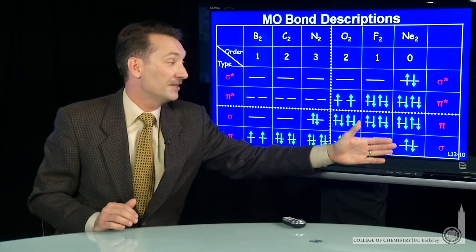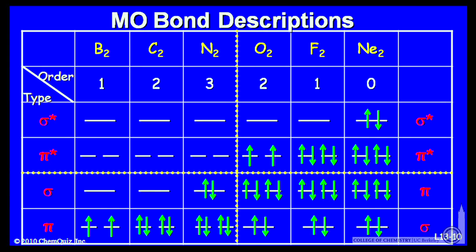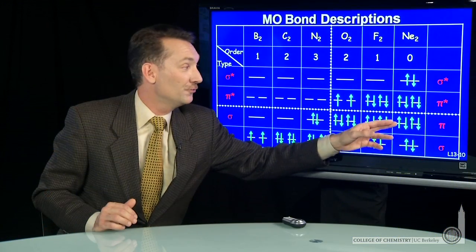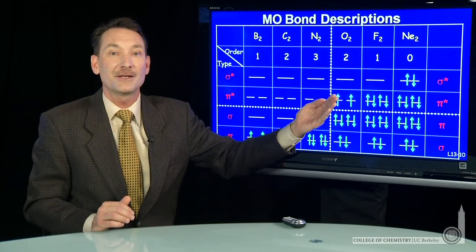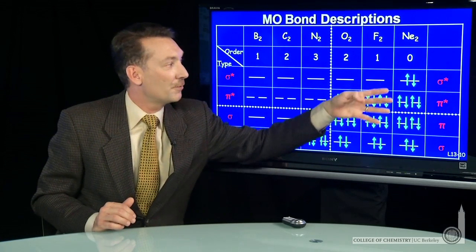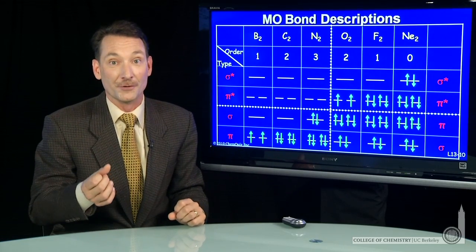And the final element, neon, we take the 6 electrons in the p orbitals for neon, 12 total. We populate the molecular orbitals, calculate the bond order, and you can see there's an equal number of bonding and anti-bonding electrons for a formal bond order of 0.